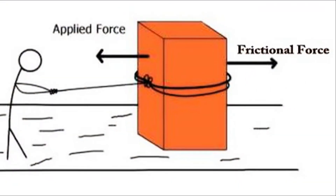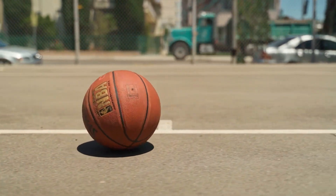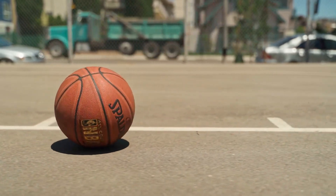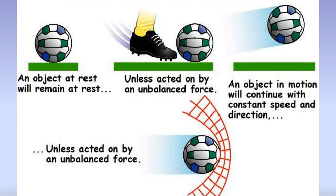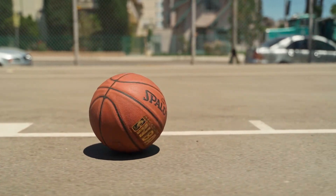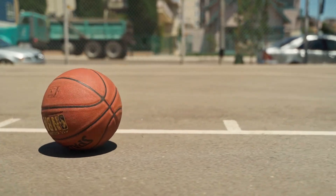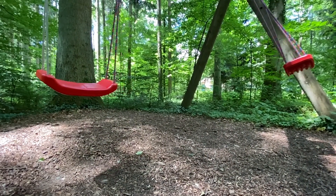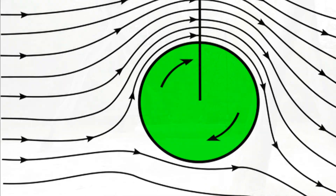Friction and frictional force: Roll a ball on open ground — the ball soon comes to a halt even though you do not see any obstruction in its path. Give a swing a push; it begins to move to and fro but gradually slows down and eventually stops completely even though you do not touch it. In both cases, a force has opposed the motion of the ball and the swing and caused them to stop moving. The ball is stopped by the ground and the swing is stopped by the air. This is due to friction between the surfaces of the ball and the ground, and of the swing and the air.